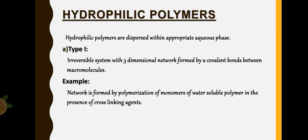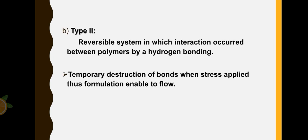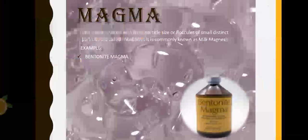Next, hydrophilic polymers are dispersed within appropriate aqueous phase. Type one has a reversible system with three-dimensional network formed by covalent bonds between macromolecules. Example is the network formed by polymerization of monomers of water-soluble polymer in the presence of cross-linking agents. Type two is the reversible system in which interaction occurs between polymers by hydrogen bonding, and there is temporary destruction of the bonds when stress is applied and there is flow.